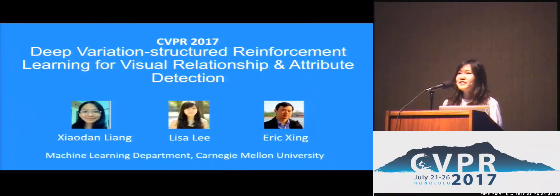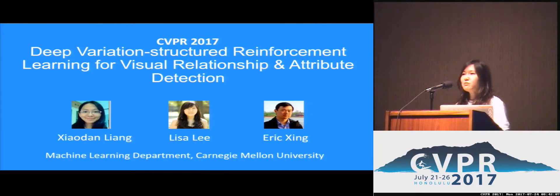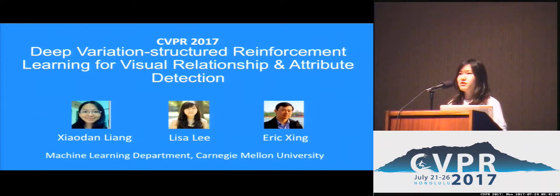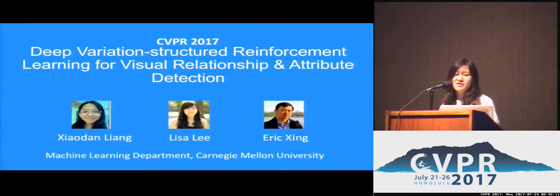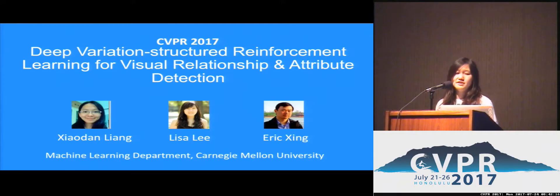Hi everyone, my name is Lisa and I'm a PhD student at Carnegie Mellon in the machine learning department. I'll be presenting our new algorithm called the Variation, a deep variation structured reinforcement learning for the problem of visual relationship and attribute detection.